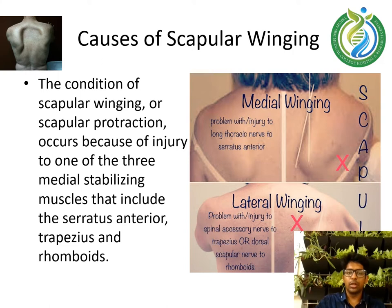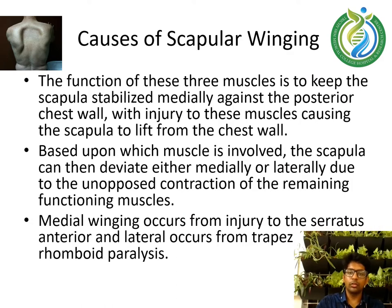Causes of scapular winging. The condition of scapular winging or scapular protraction occurs because of injury to one of three medial stabilizing muscles: the serratus anterior, trapezius, and rhomboids. The function of these three muscles is to keep the scapula stabilized medially against the posterior chest wall, with injury to these muscles causing the scapula to lift from the chest wall.